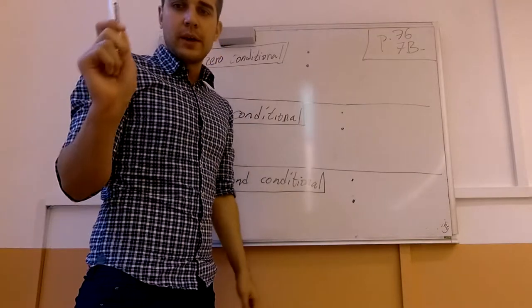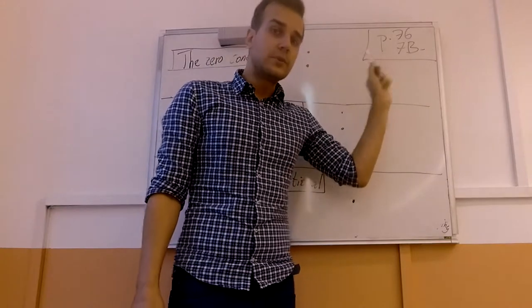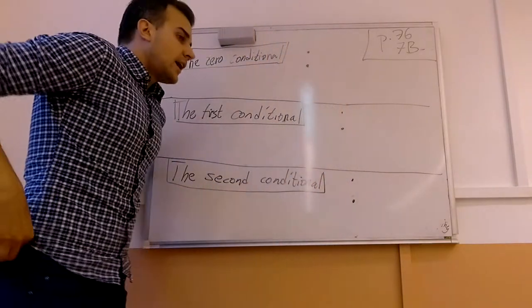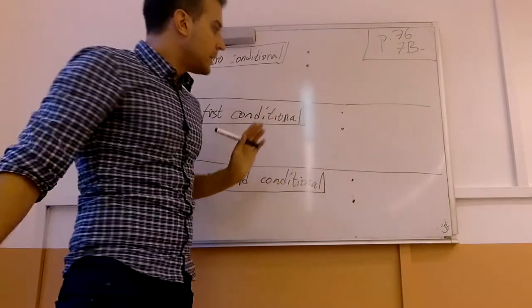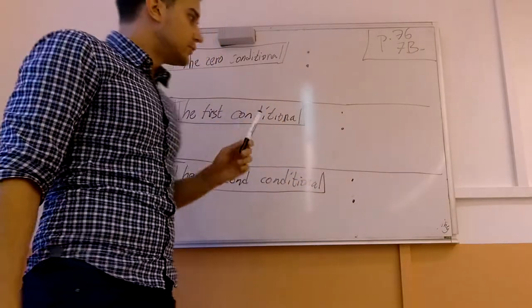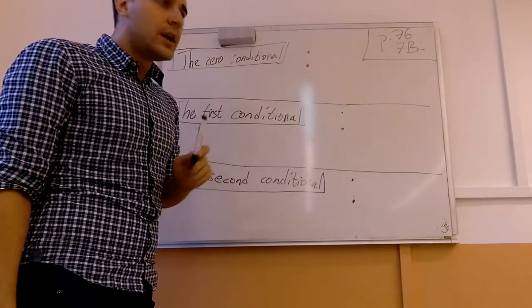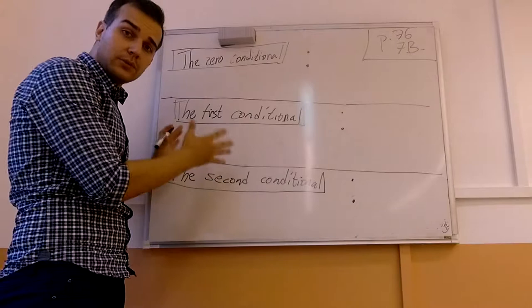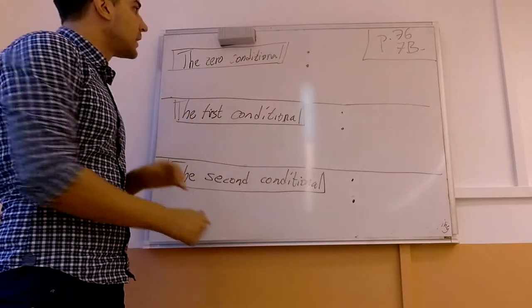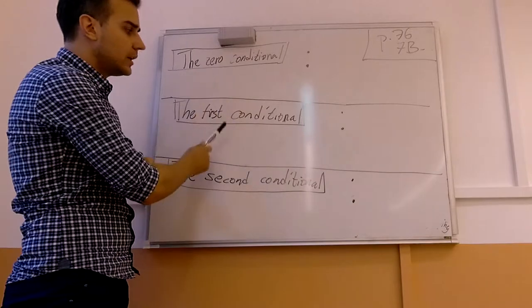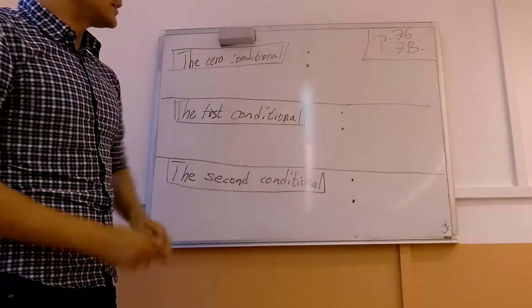You can find it on page 76 and it is chapter 7B. I have decided instead of just studying the second conditional, I think it is much better to have a look at the other kinds of conditional that you already know. Let's see what is the difference between these three conditionals. I think the zero conditional and the first conditional you should already know.